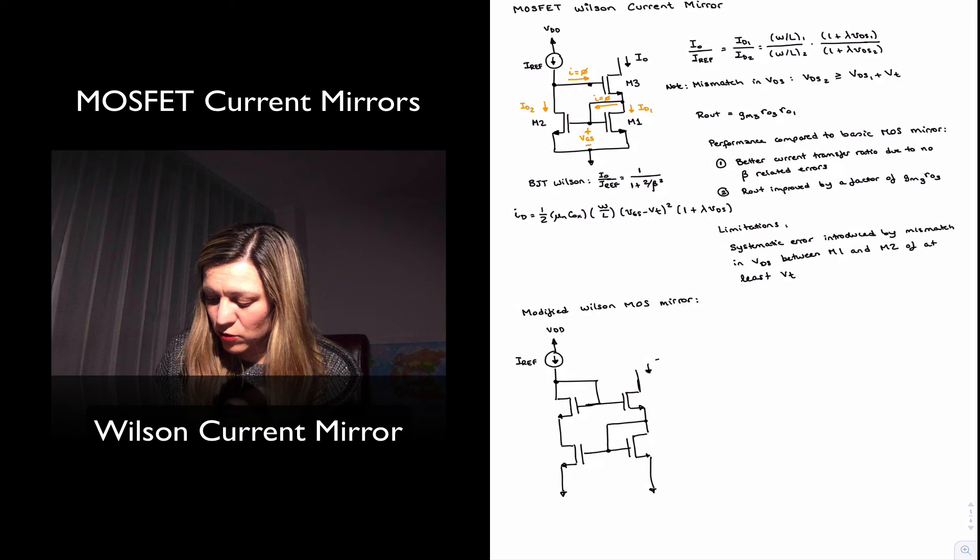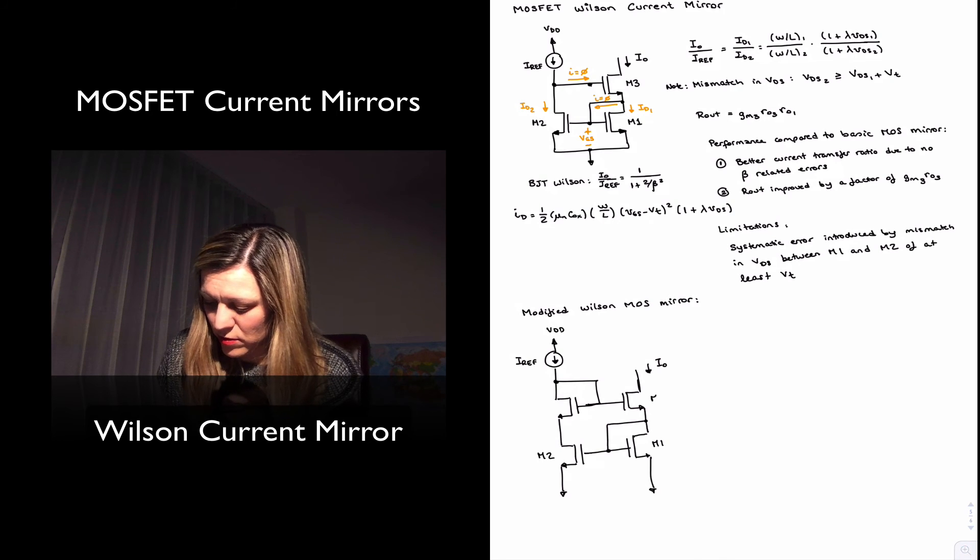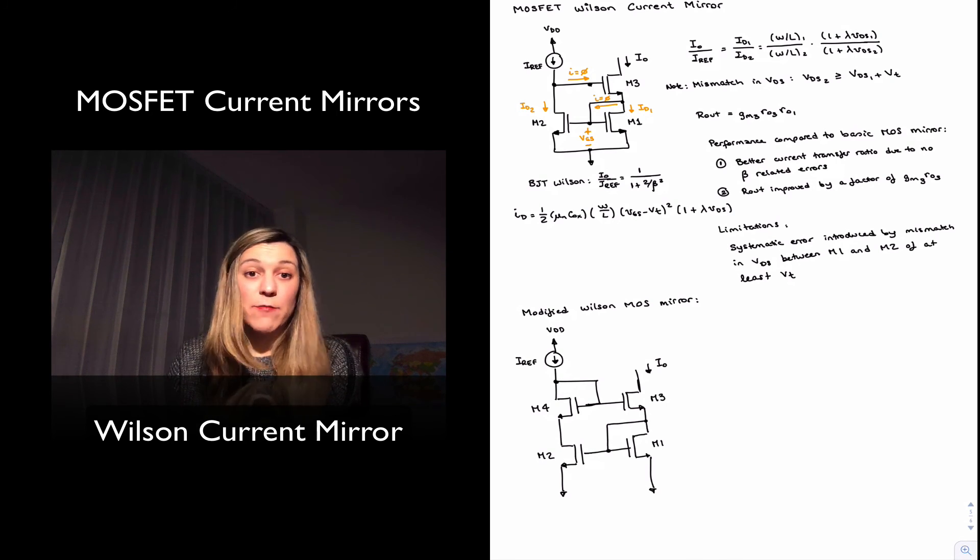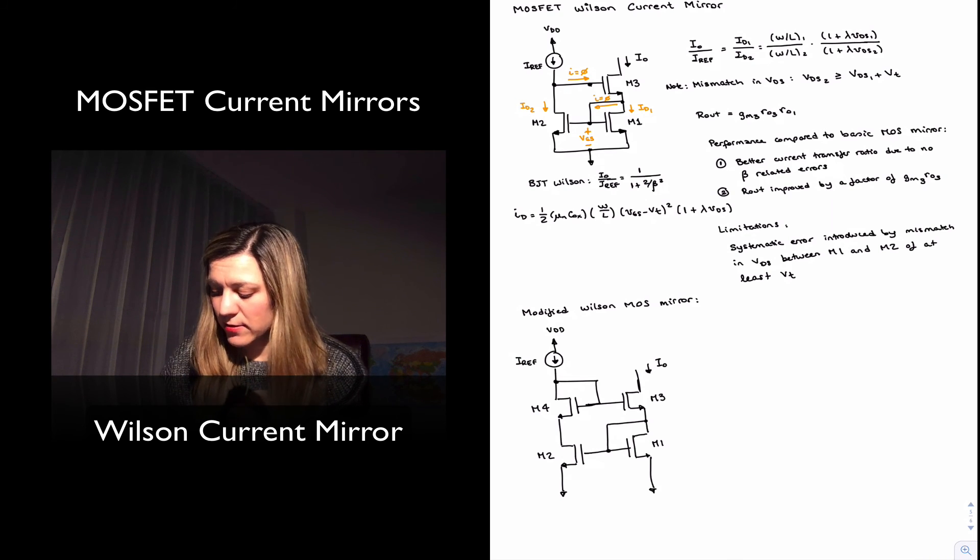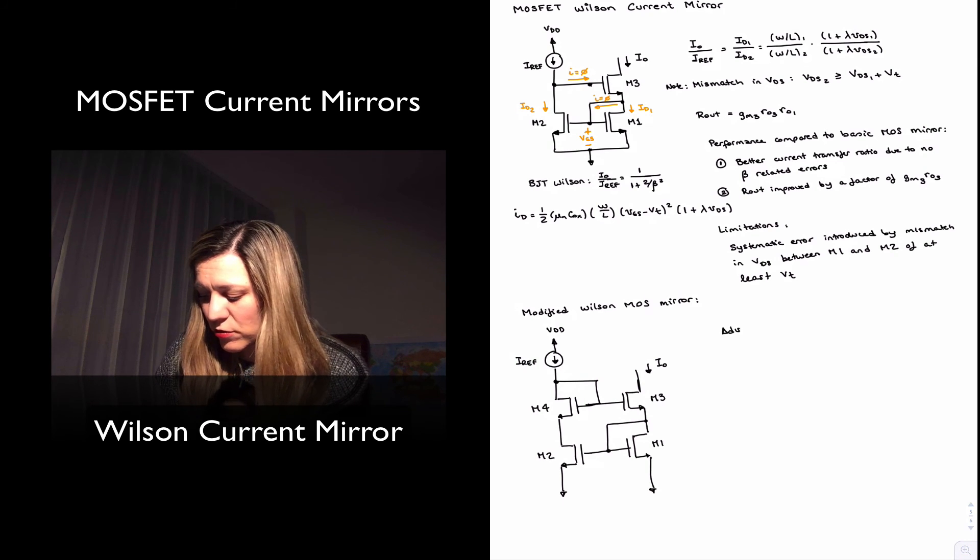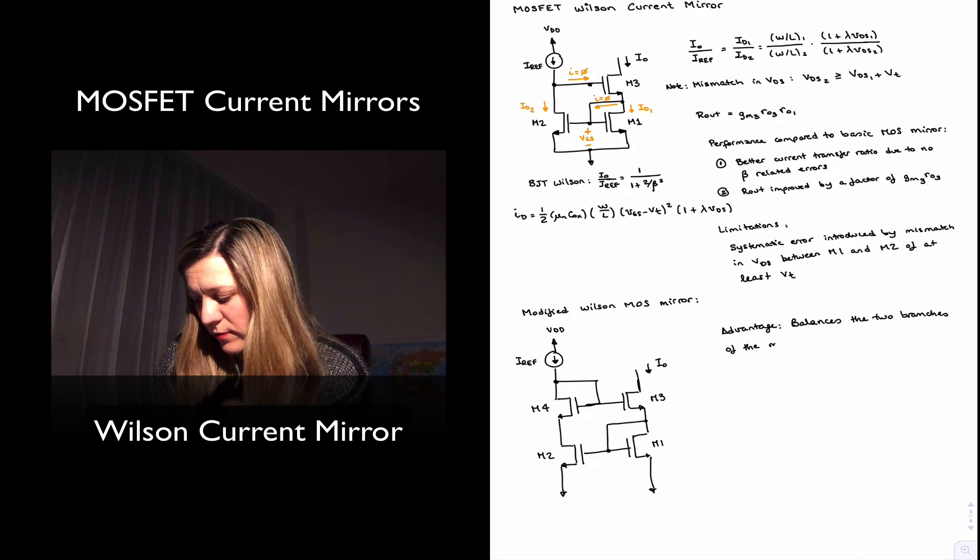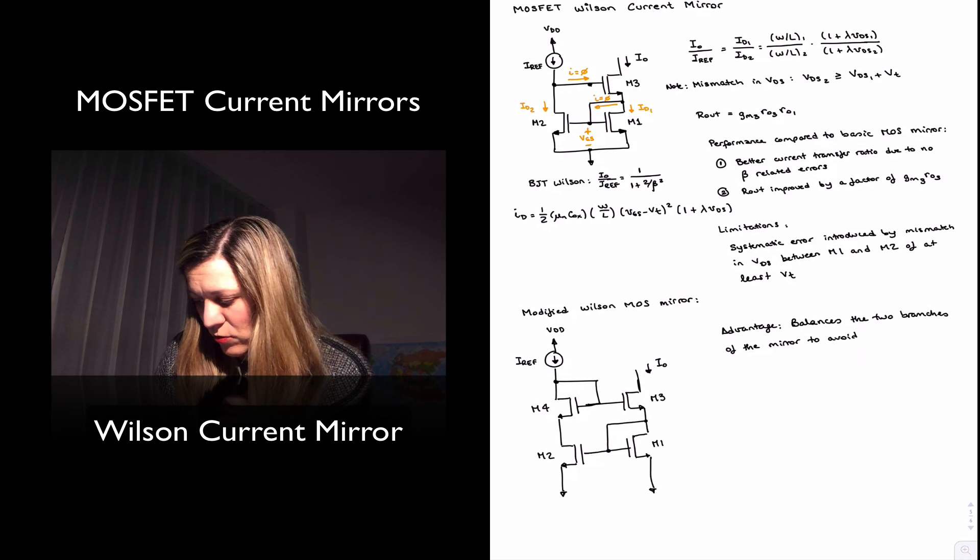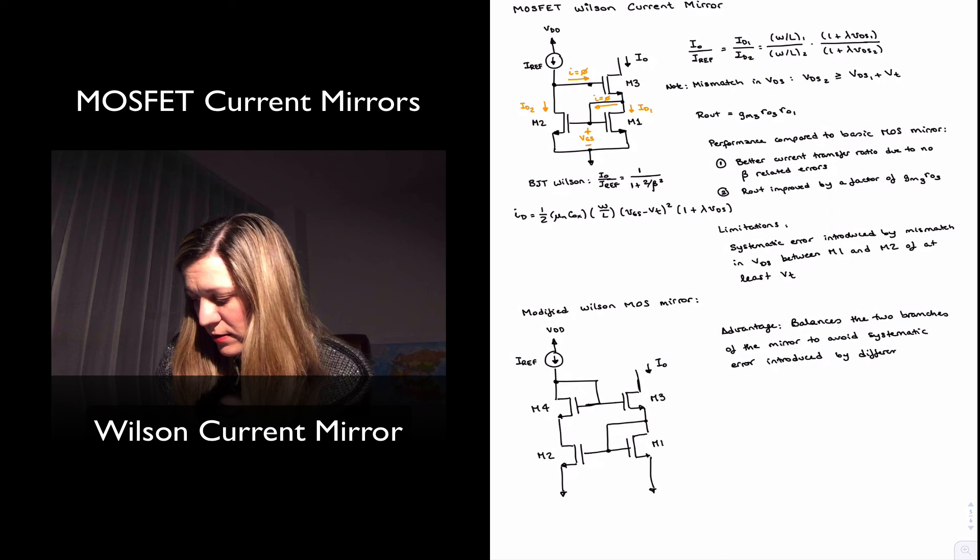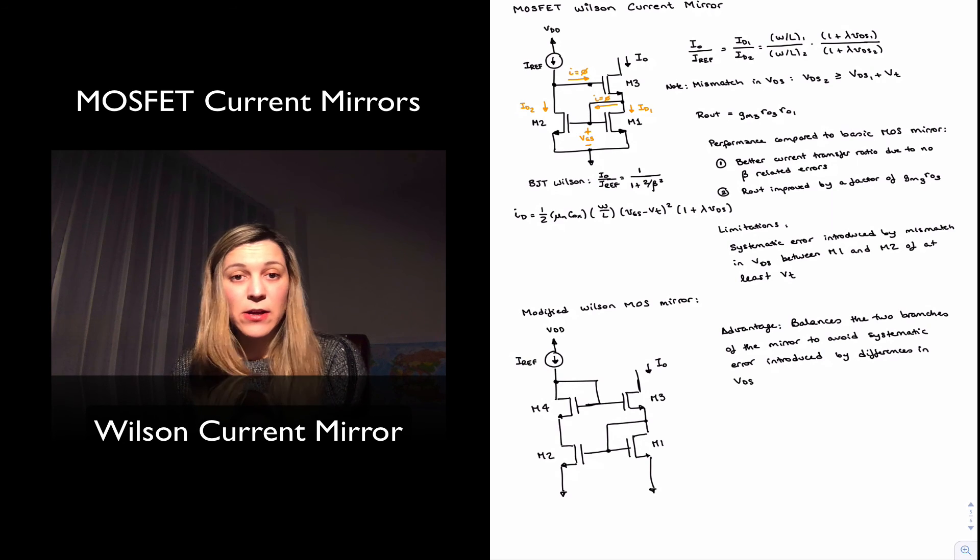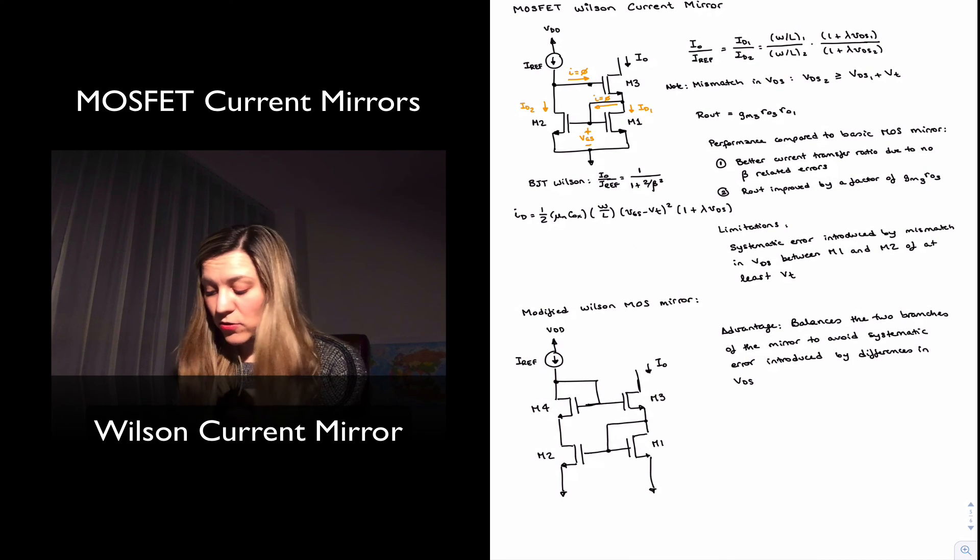So this would be, just to keep things consistent, this would be my I out. M1, M2, M3, and this is the new transistor we have introduced, M4, to basically balance the two branches of the circuit. And so advantage of this circuit is that it balances the two branches of the mirror to avoid systematic error introduced by differences in VDS.